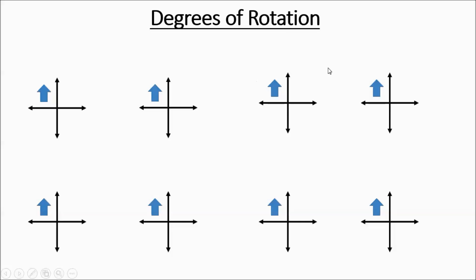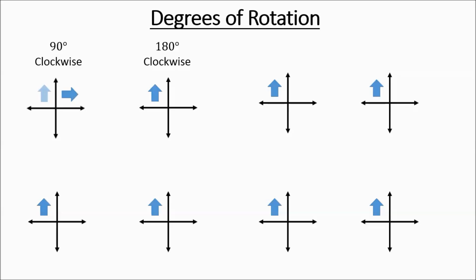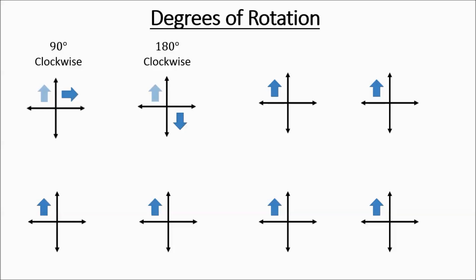I've got a bunch of pictures of an arrow, and currently it's in the second quadrant. This first one I'm going to do a 90 degree clockwise rotation. Notice how it was pointing up, and now it's pointing right. Here's 180 degrees clockwise — it was in quadrant 2, now it's in quadrant 4. It was pointing up, now it's pointing down. That's 180.